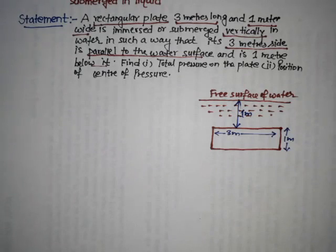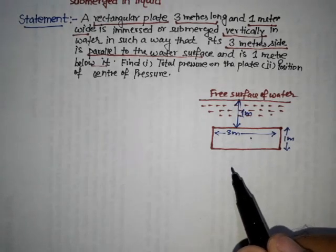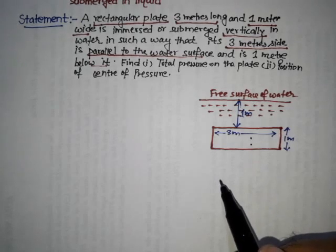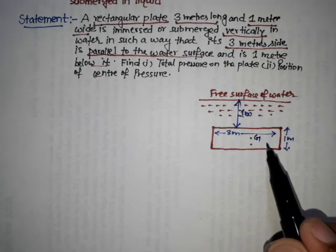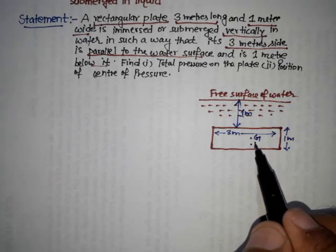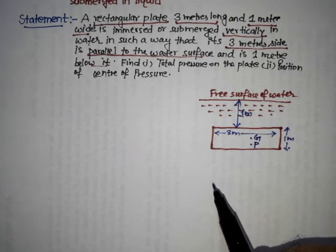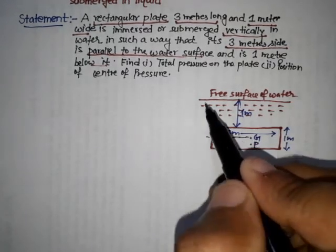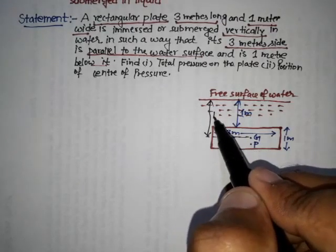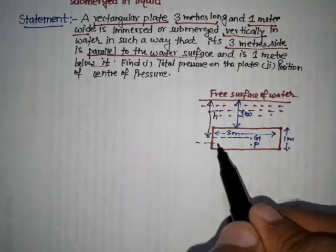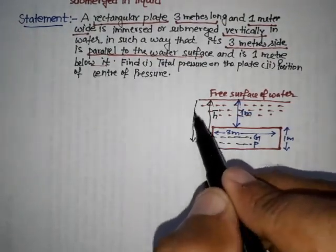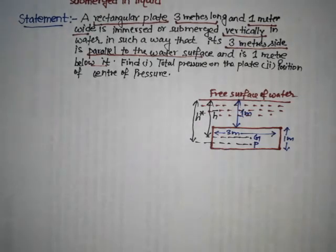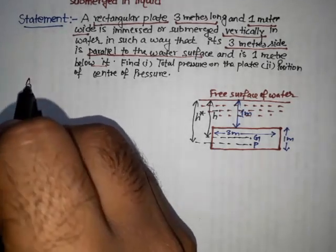So here we have 2 points: first one is the center of gravity, denoted by G, and second is the center of pressure, denoted by P. The distance of center of gravity from the free surface is H bar, and the distance of center of pressure from the free surface of liquid is H star. So here firstly we write down the given variables.